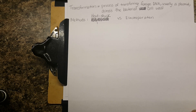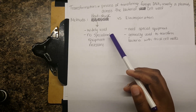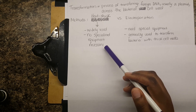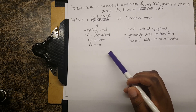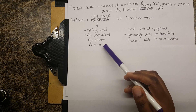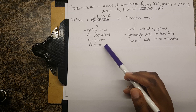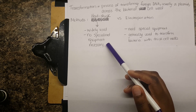With heat shock, you really don't need any specialized equipment — just a water bath capable of different temperatures and an ice bucket. You introduce your DNA to the bacteria, let it sit on ice, put it at 42°C for a minute, then put it back on ice, and you're done. It's very simple, and if you had the reagents you could theoretically do it at home — that's just how easy it is.